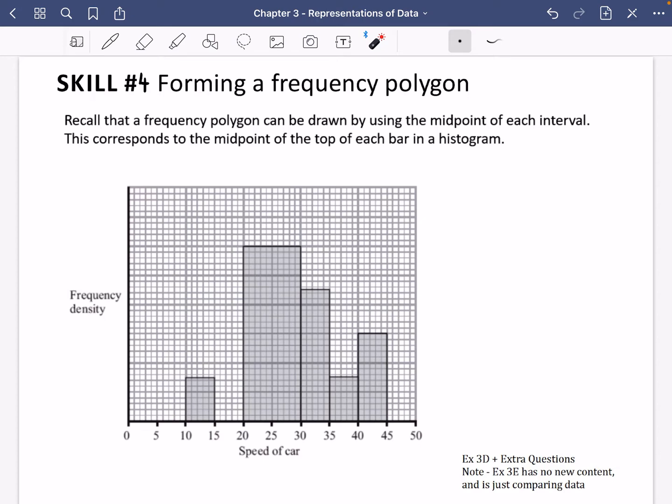Just recall from GCSE that a frequency polygon can be drawn by using the midpoint of each interval. This corresponds to the midpoint of the top of each bar in a histogram, because clearly these are the intervals that we've got here.